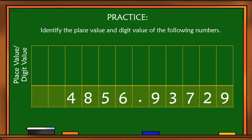Let's answer. Let's go to place value first. Six: ones. Five: tenths. Eight: hundredths. And four: thousandths.